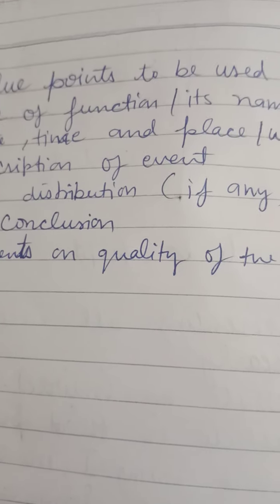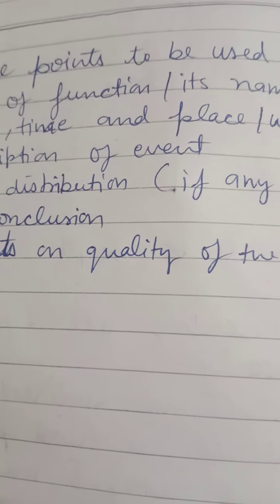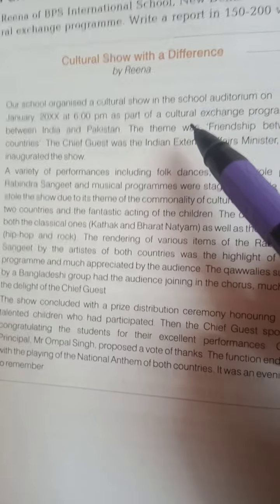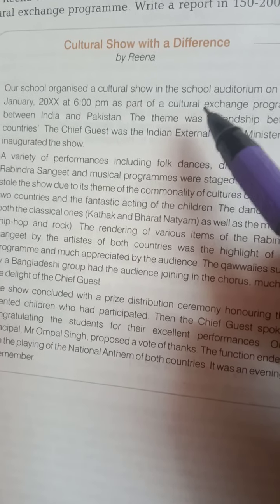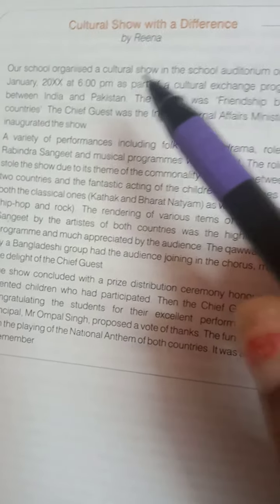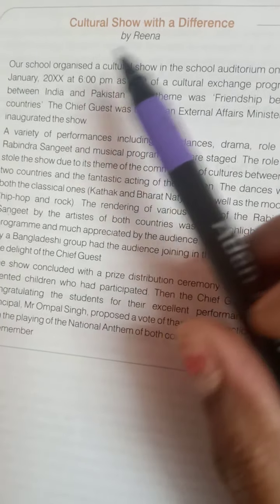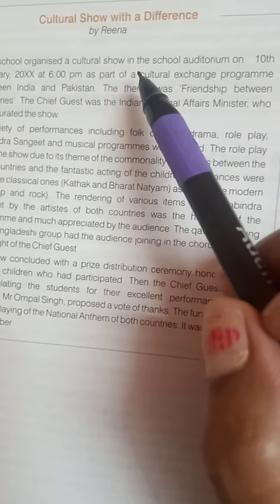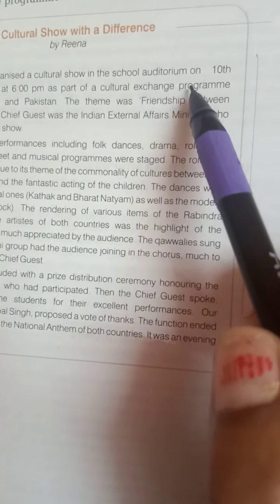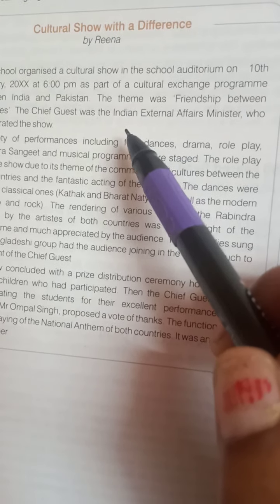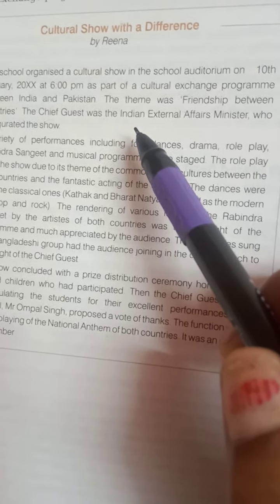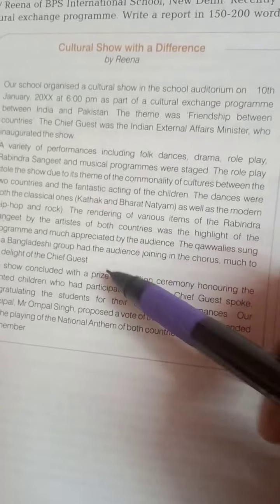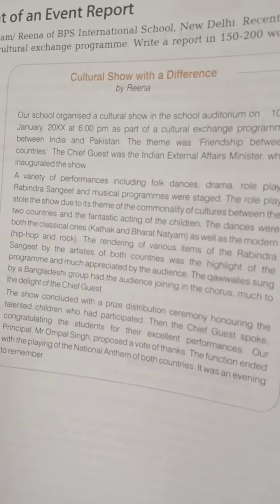You will conclude by writing about the event — whether it was effective and nice. Here is an example of a report based on an event. There is no place and date at the beginning; they are mentioned within the report. For example: 'Our school organized a cultural show in the school auditorium.' This is the second type of report — based on events and functions. No need to write place and date separately; include them in your report. Thank you, students. Jai Hind.